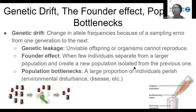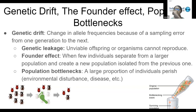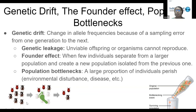Population bottlenecks are when a large proportion of individuals perish from environmental disturbances, diseases, etc. The diagram shows the original population going through a bottleneck, leaving only a small surviving subset. The effect is similar to the founder effect because the smaller population mates among themselves. Environmental disturbances like hurricanes or tornadoes, disease, or even something stepping on a beetle population could cause this kind of dramatic population reduction.